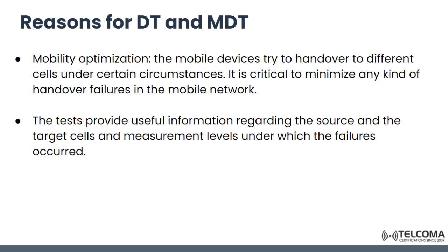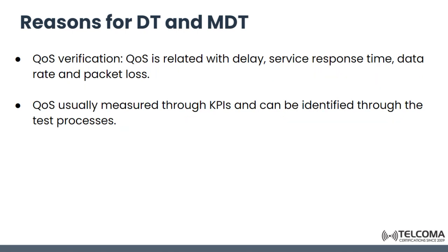For mobility optimization, mobile devices try to hand over to different cells under certain circumstances. It is critical to minimize any kind of handover failures in the mobile network. Tests can provide useful information regarding the source and target cells and also the measurement levels under which some failures occurred.